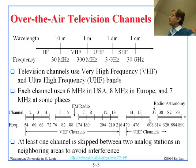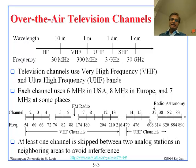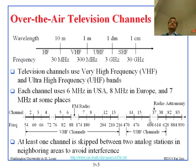UHF is the decimeter band because the wavelength is from 1 decimeter to 10 decimeters — and 10 decimeters is 1 meter. Then there is the centimeter band, and the millimeter band and so on. As you all know, in television there is a VHF channel and a UHF channel.